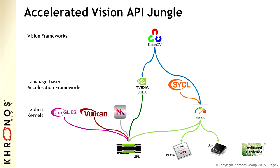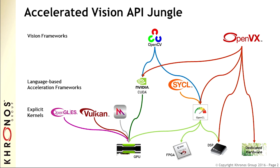Going up a level again, we have the vision frameworks — frameworks that come prepackaged with a bunch of vision functionality. We've just heard about OpenCV from the father of OpenCV. The open standard equivalent — not equivalent, it's different, they complement each other — is OpenVX. OpenVX is a spec, whereas OpenCV is a body of open source. OpenVX is intended to enable a vision algorithm to be expressed and run with pretty good performance portability across a great range of hardware — CUDA, OpenCL, directly to DSP, or even directly to hardware.